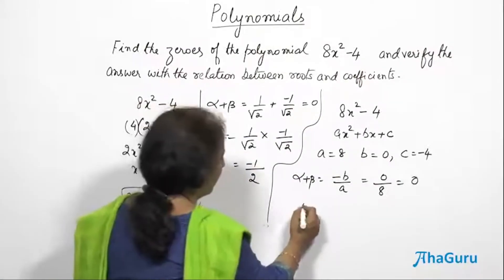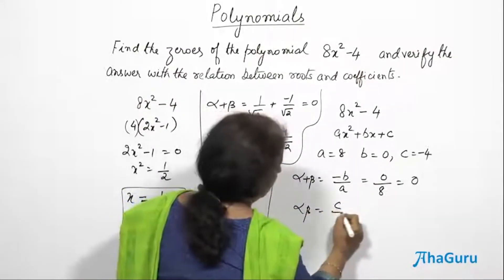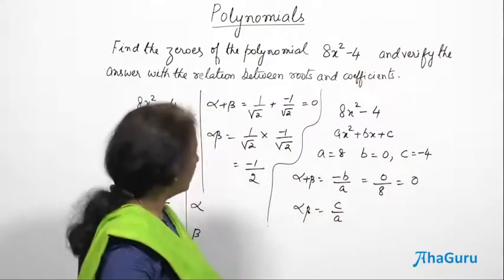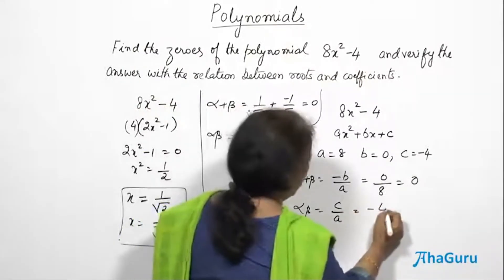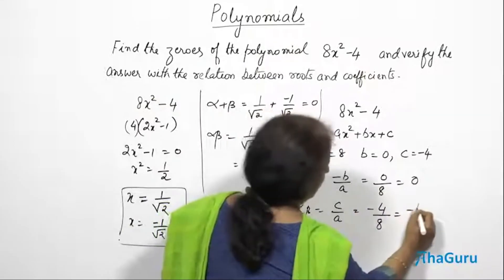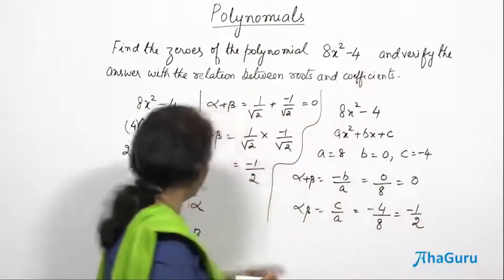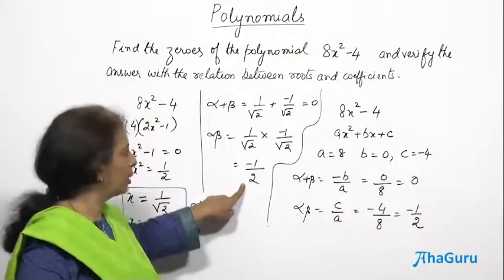Let us find alpha beta. Alpha beta is equal to c/a. What is c? -4. What is a? 8. Which is -1/2. This is the same as -1/2.